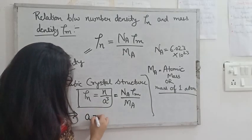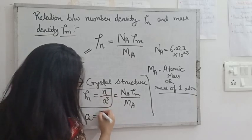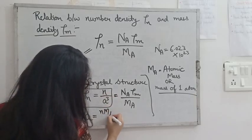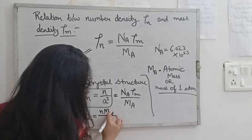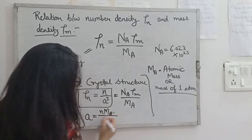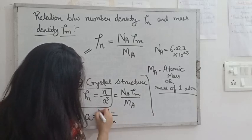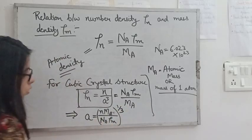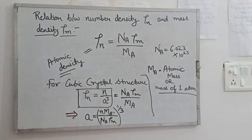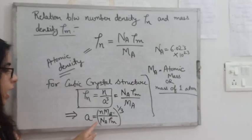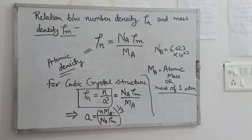So this will be the formula for a, which we are going to find in terms of n, Mₐ, and ρₘ.